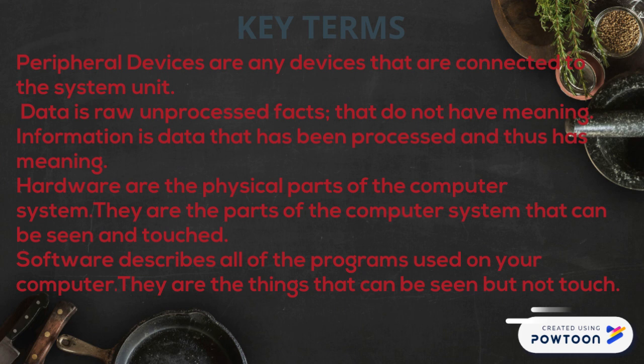Now, if I told you that those numbers are actually grades from a class after a test, you now have more information, which gives them meaning. When you give data meaning, or when you process data, it becomes information. So information can be defined as data that has been processed and thus has meaning.